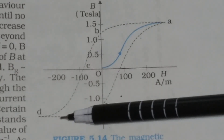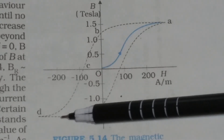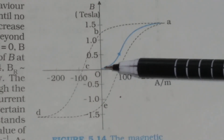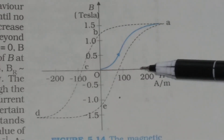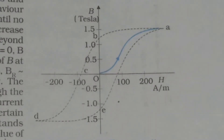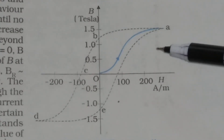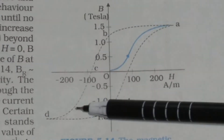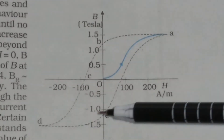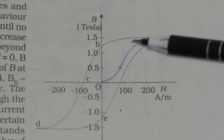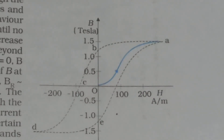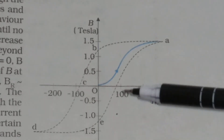At about 1.5 tesla the magnetic field gets saturated. If you now reduce the current and make the current again positive, the curve will reach back to point A, completing the cycle. This complete cycle shown by the dotted lines is called the hysteresis cycle of ferromagnetic material. The amount of magnetism lost in a complete cycle of magnetization is called the hysteresis loss.